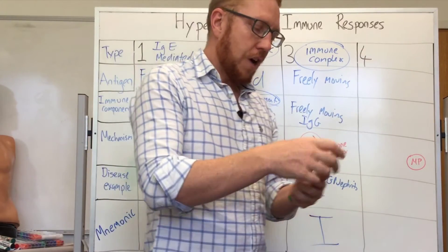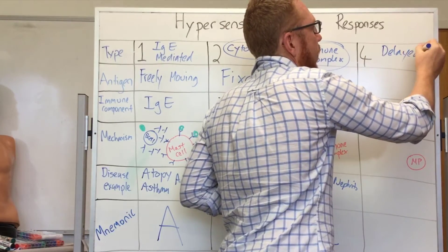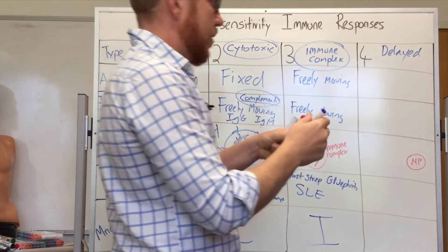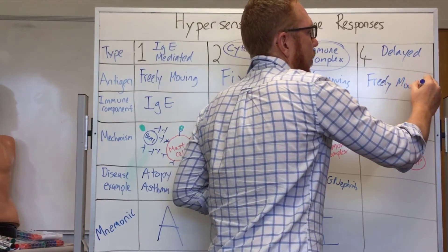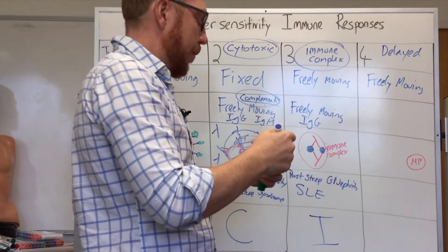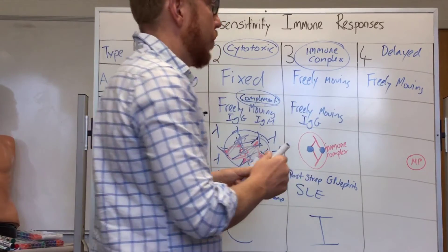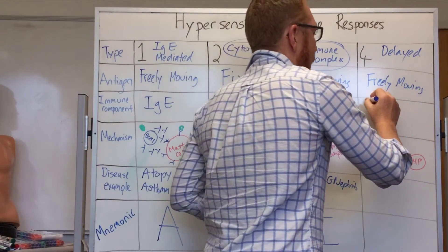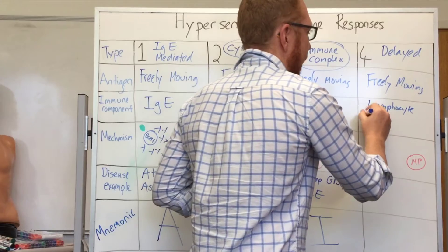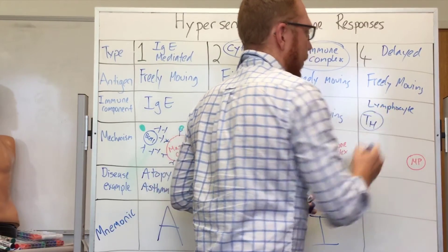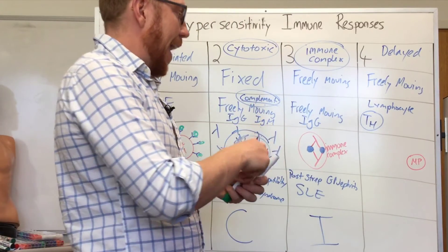Finally we move to type 4. Another name for this is delayed. The antigen is generally going to be freely moving, similar to type 1, it can come into the body. In terms of the immune component here, there's no antibodies driven in this type. This is more a lymphocyte, particularly a T helper cell. That's the big player in this.